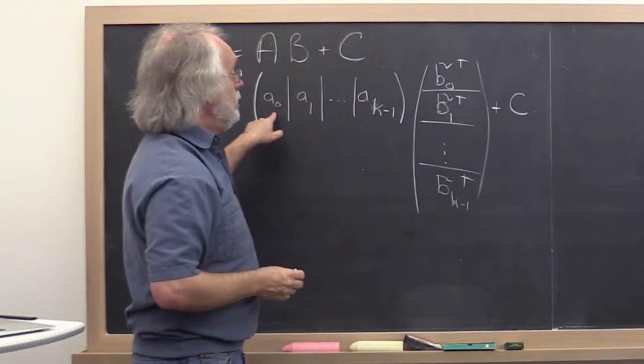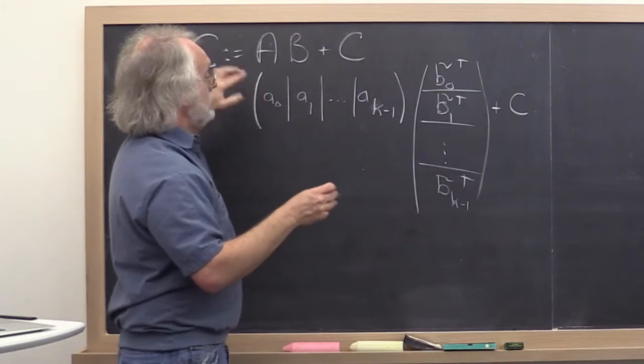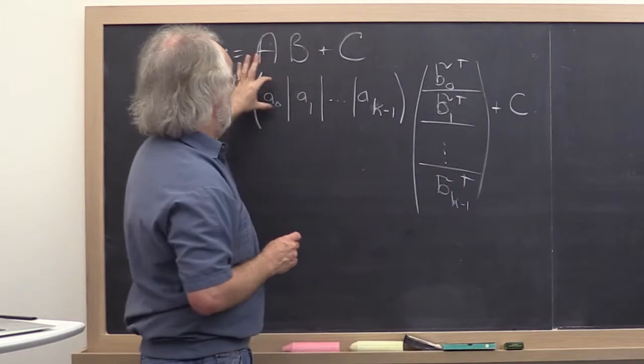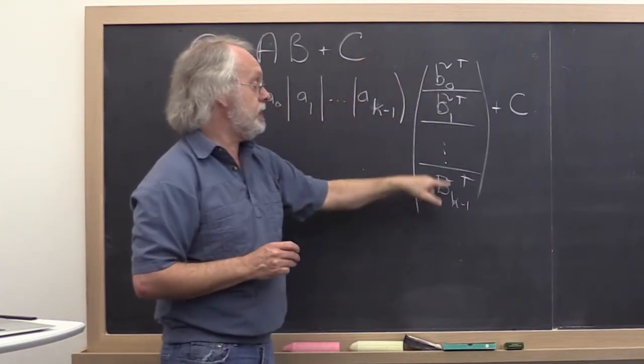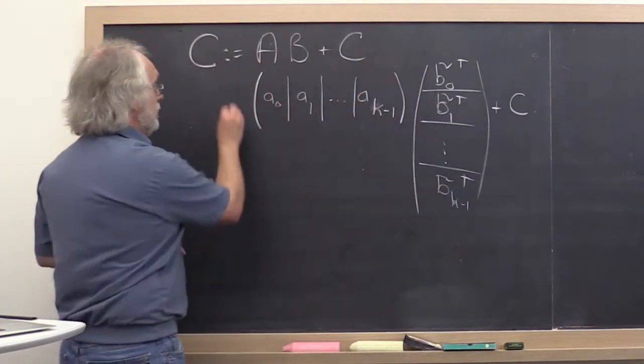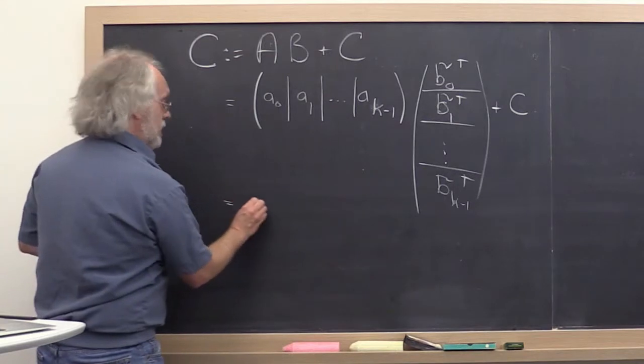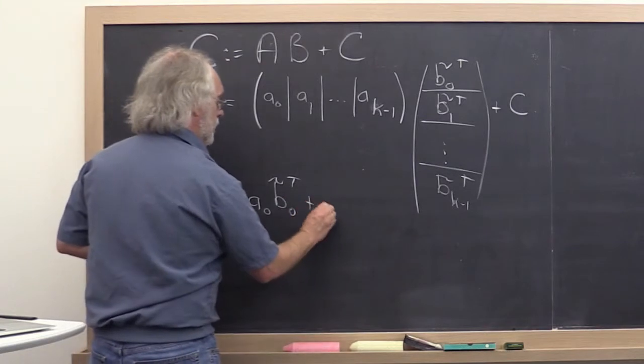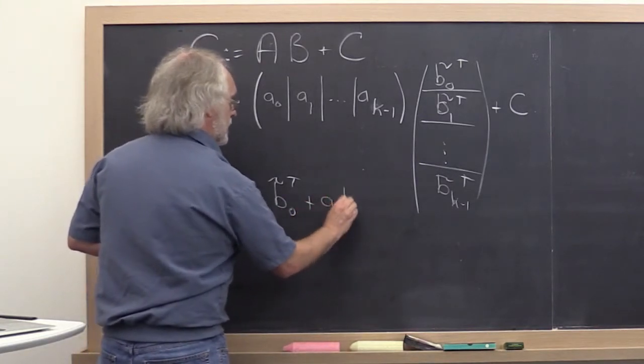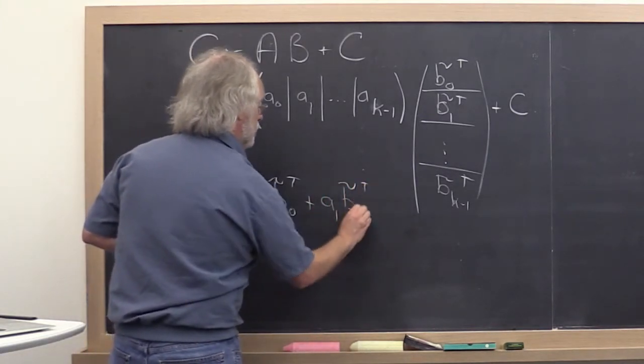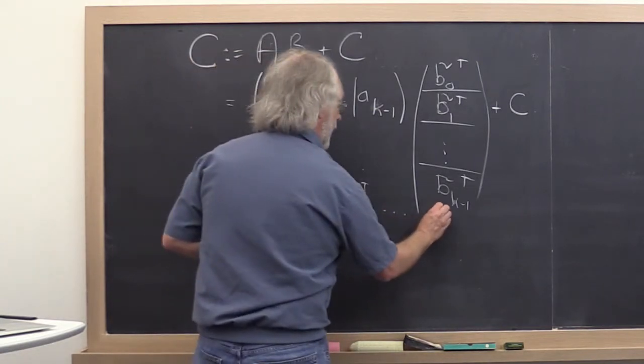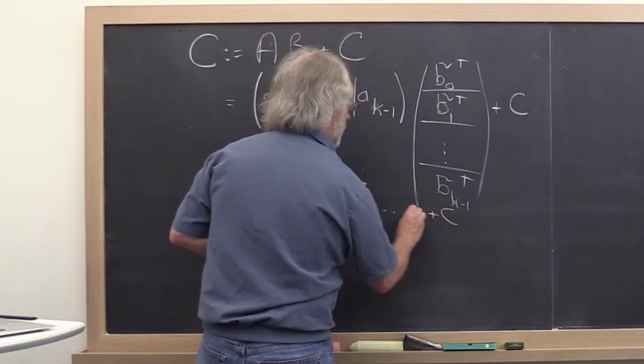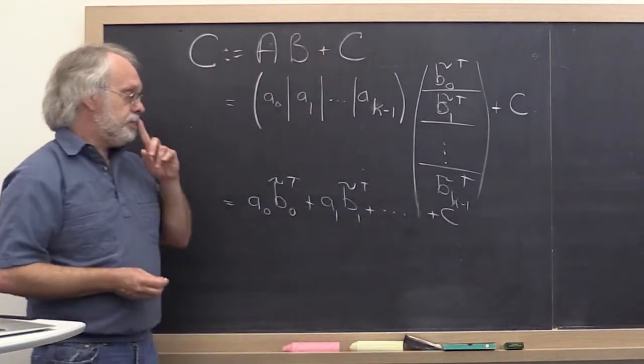And then if you multiply this out, just like this were a dot product with numbers, you now do a dot product with symbols. And the result of this is A0 times B0 tilde transpose plus A1 times B tilde transpose 1 and so forth, all added to matrix C.